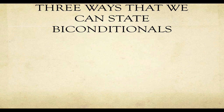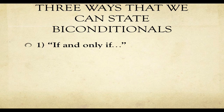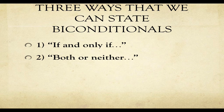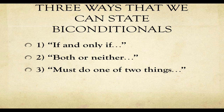There are three ways to state biconditionals we should recognize immediately. First: 'if and only if' — whatever is in the statement is both the antecedent and the consequent. Second: 'both or neither' — indicating a same-sign biconditional where A proves B and B proves A, and their contrapositives give neither. Third: 'must do one of two things' — creating an affirmative duty combined with a mutual exclusion, meaning you'll do exactly one of two things.